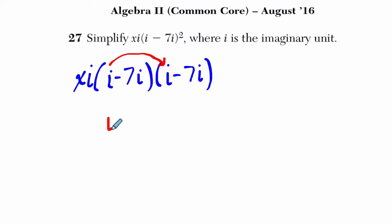i times i is i squared. i times negative 7i is negative 7i squared. Negative 7i times i is negative 7, and i times i is i squared. And then negative 7 times negative 7i is a positive 49i squared.